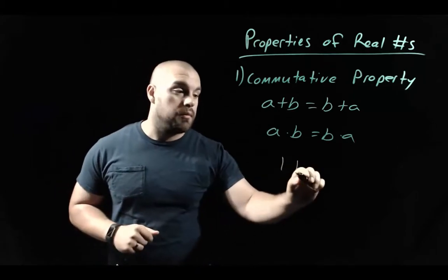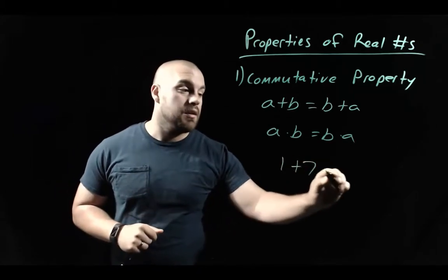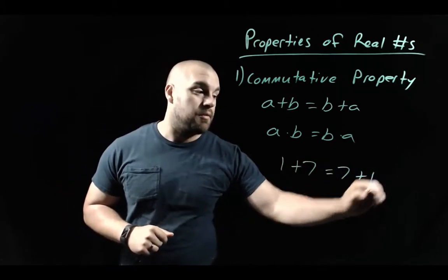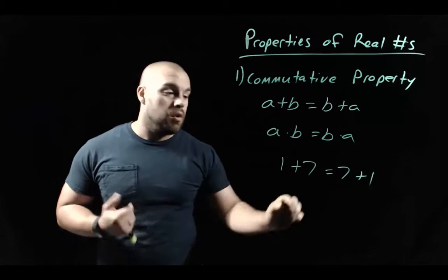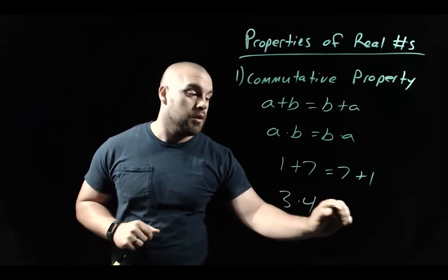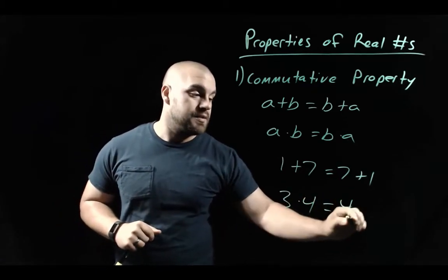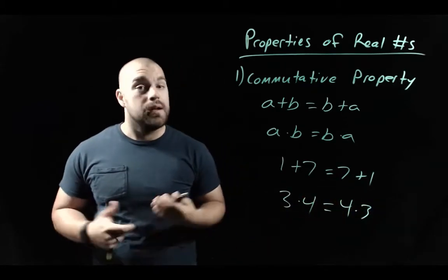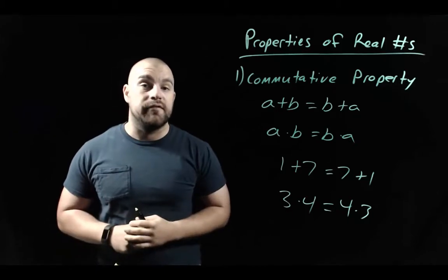For example, 1 plus 7 gives the same answer as 7 plus 1, or 3 times 4 gives the same answer as 4 times 3. That's the commutative property.